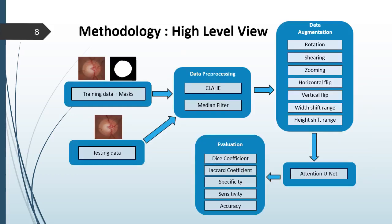The high-level view of the proposed methodology is illustrated here. As the first step, we employ fundus images along with the ground truth masks from two datasets separately. Then, we use two pre-processing techniques: contrast-limited adaptive histogram equalization and the median filter. Histogram equalization improves the contrast and quality of the image, while the median filter removes noise while retaining edge details within the image. Data augmentation techniques were also applied to address the class imbalance issue and enhance the amount of data in the dataset.